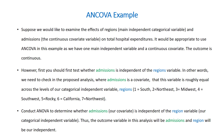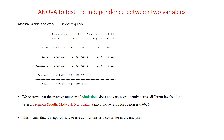We conduct ANOVA to determine whether admissions, the covariate, is independent of the region variable. Therefore, the outcome variable in this analysis will be admissions, and region will be our independent variable. In order to test the independence between the covariate and the main independent variable, we run ANOVA.